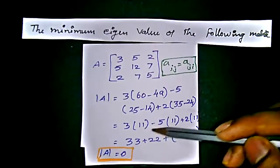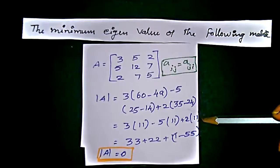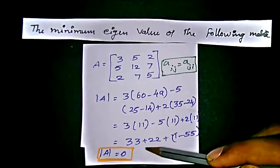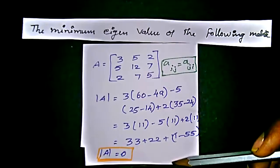Which gives us 3 times 11, minus 5 times 11, plus 2 times 11, which gives us 33 plus 22 minus 55, which is 0.